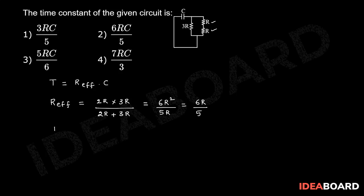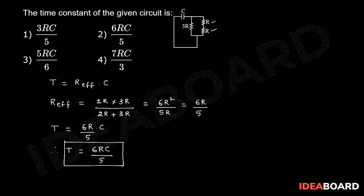So T is equal to 6R by 5 into C, therefore T is equal to 6RC by 5. So the second option is the right option.